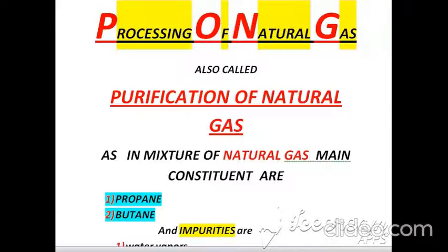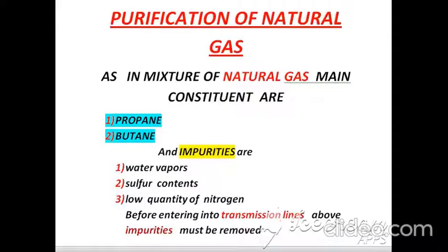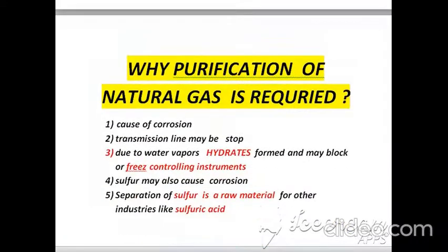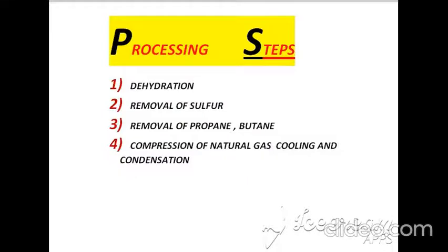Processing of natural gas is also called purification. In the natural gas mixture, two main constituents are propane and butane. Impurities include water vapors, sulfur contents, and low quantities of nitrogen. Before entering transmission lines, these impurities must be removed. Purification is required because it causes corrosion, can stop transmission lines, water vapors form hydrates that block and freeze controlling instruments, sulfur can cause corrosion, and separated sulfur is a raw material for other industries like sulfuric acid production.